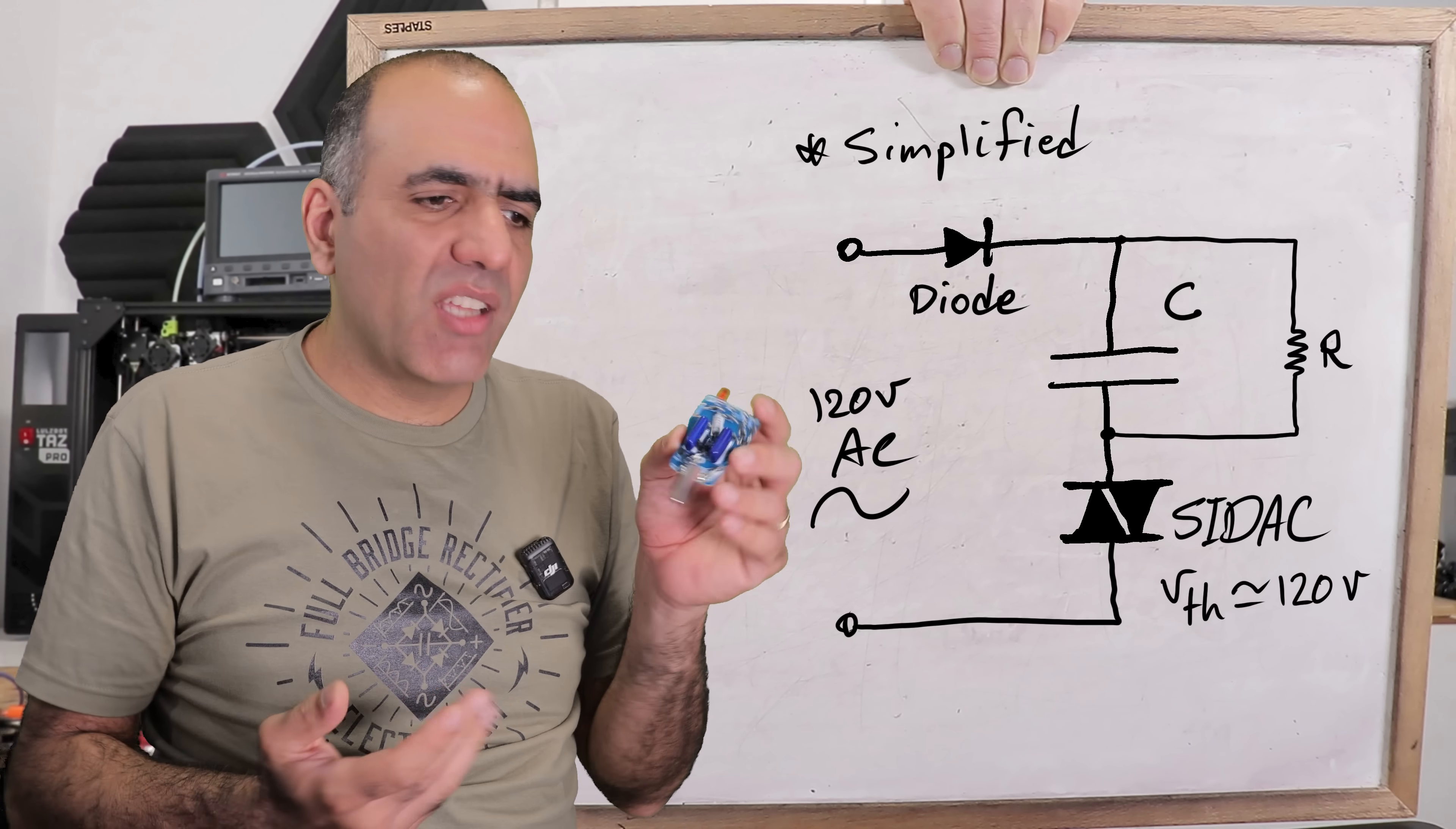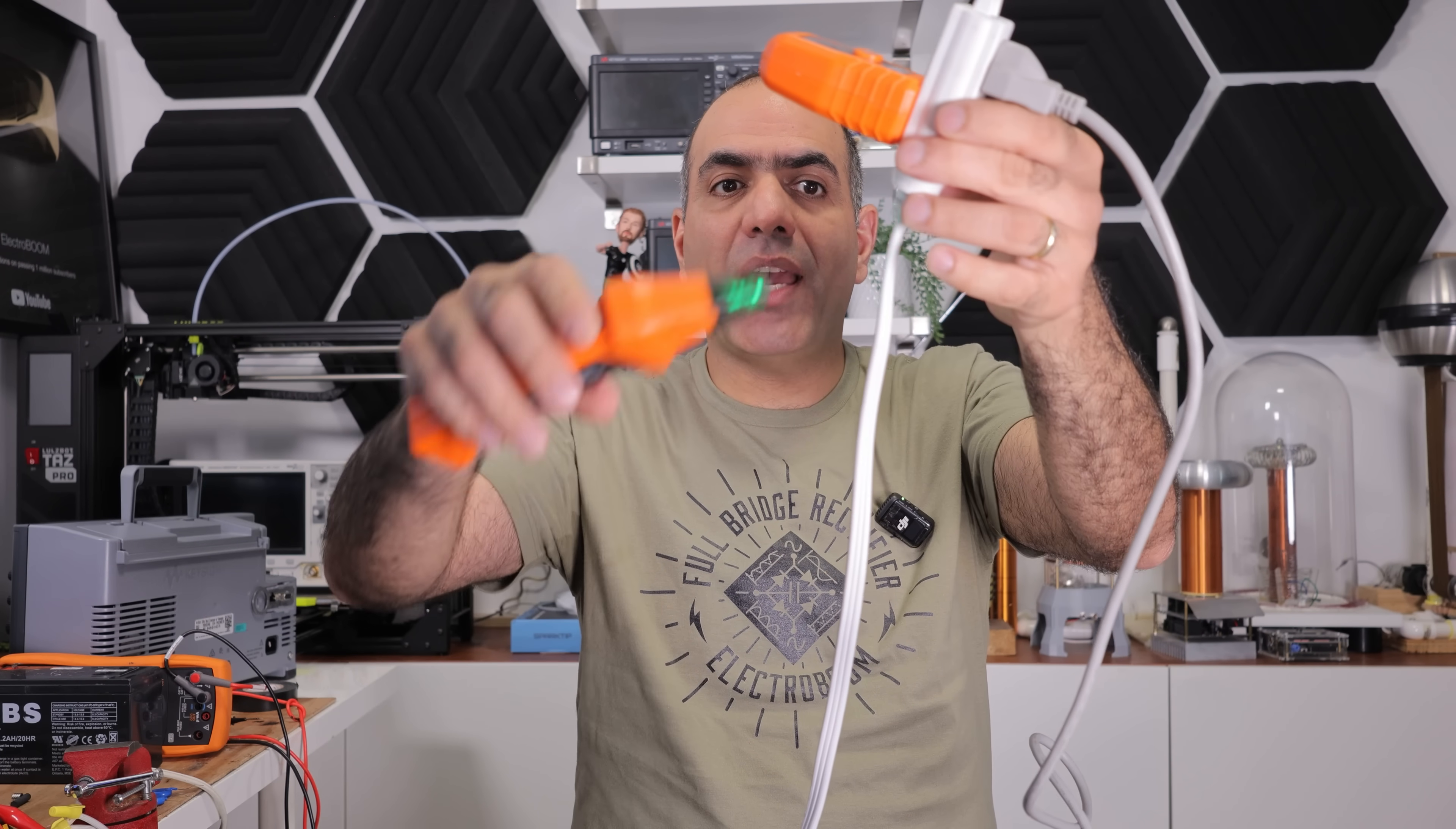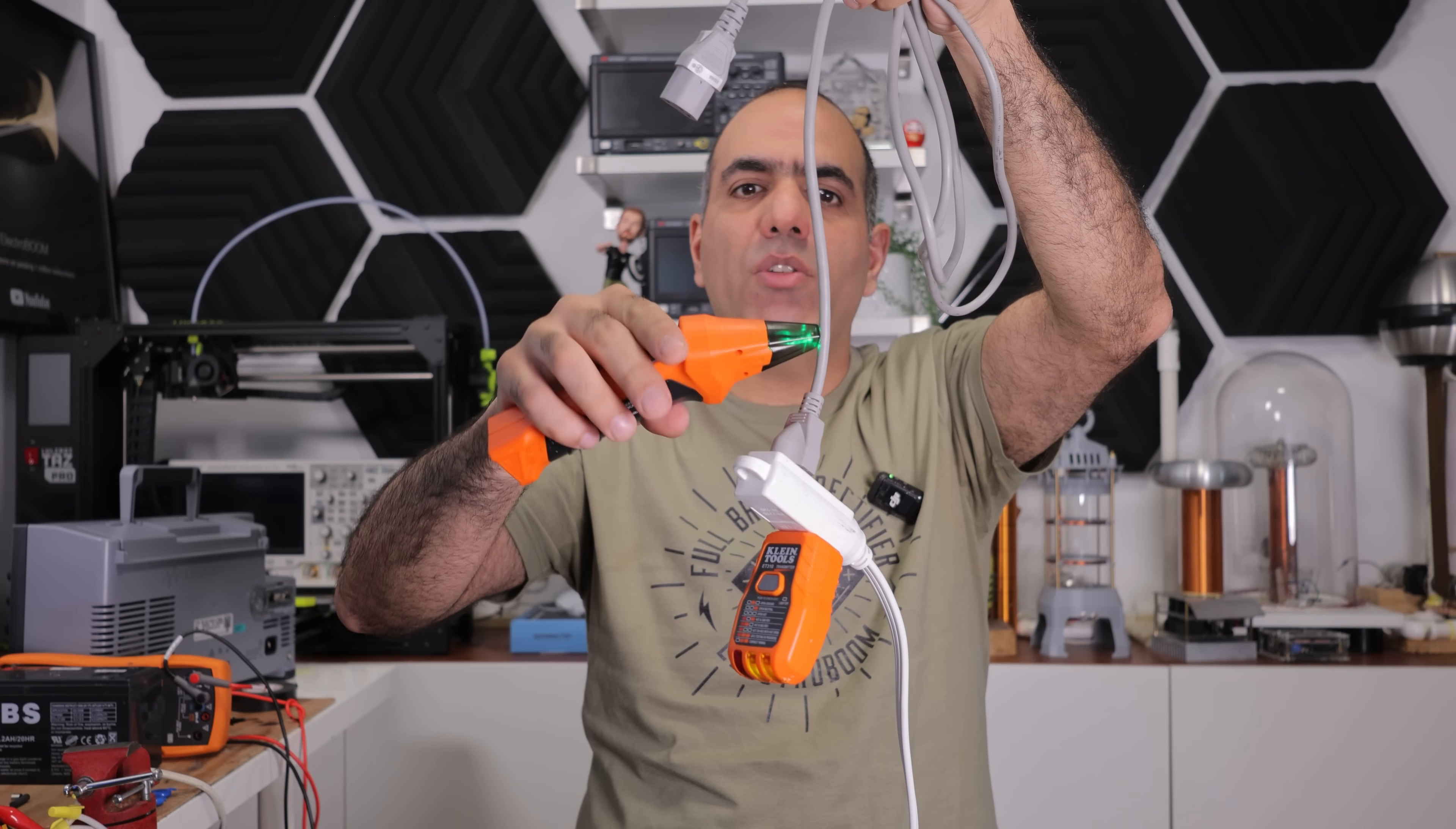One important thing about this measurement method is that we are measuring the magnetic fields created by the pulse of current. So we can only measure where the current is flowing. For example, this power cord is plugged into the same outlet, but there is no current running through it. So we don't measure anything. Well, we learned so much. But don't let that stop you from learning even more at my sponsor Brilliant.org.